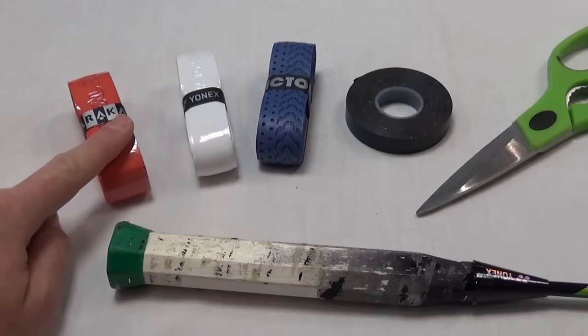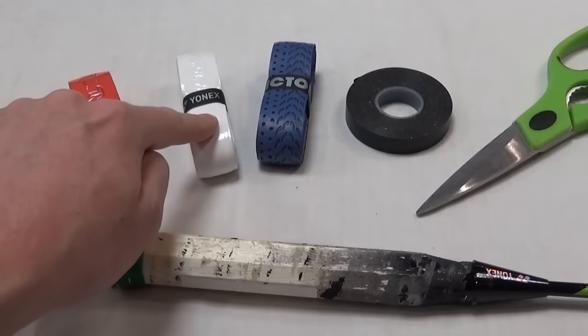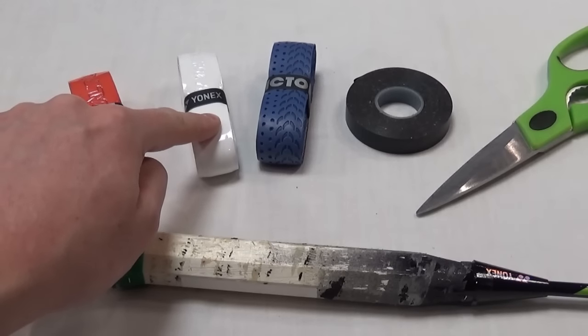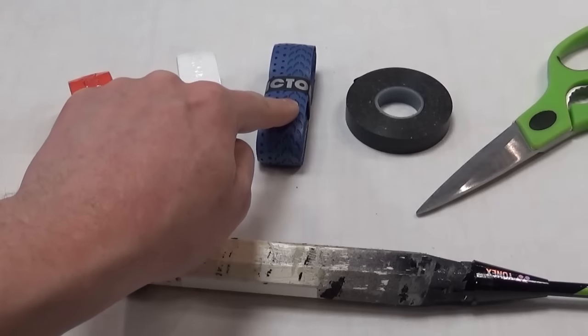We've got the Caracal PU grip which is nice and durable, has a nice tacky surface. We've got the Yonex HiSoft Grap which is a little thinner, a little softer, and the Victor Fishbone which has a bit of texture on the surface.